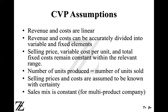The number of units produced must equal the number of units sold, meaning you are not producing for inventory or piling up inventories. When you start producing for inventory, as you produce more and more units, your fixed cost does not increase within the relevant range, which decreases your total cost per unit — the fixed cost per unit declines — and that can affect your cost volume profit graph.